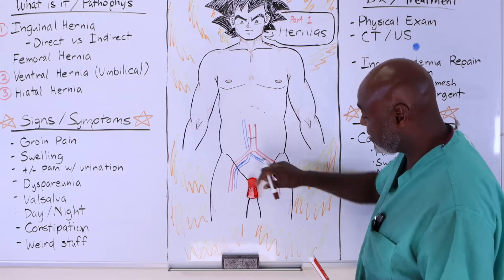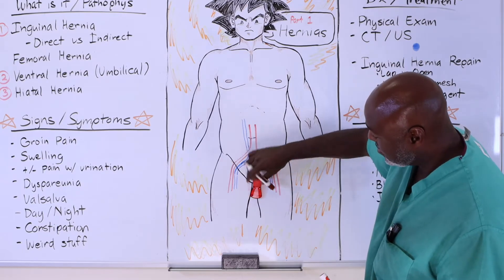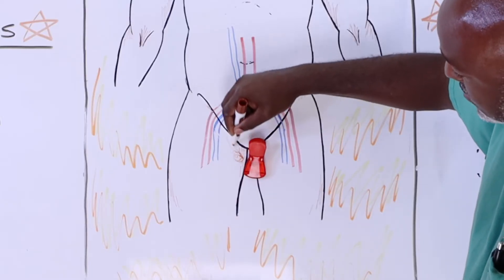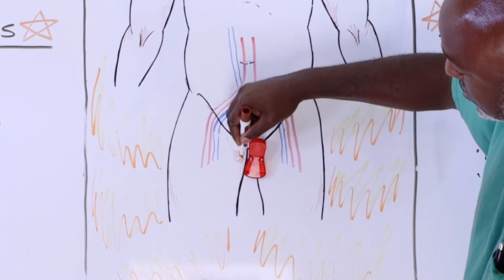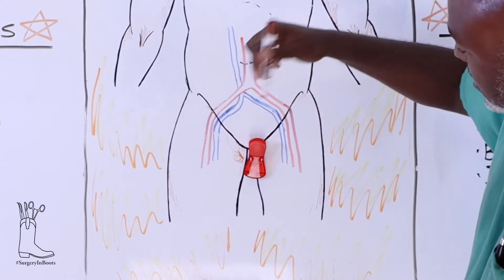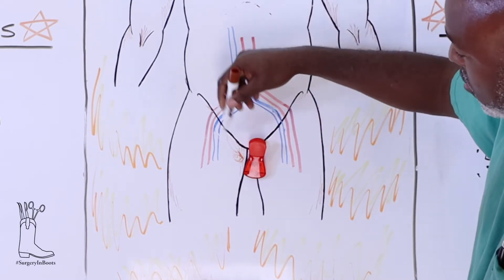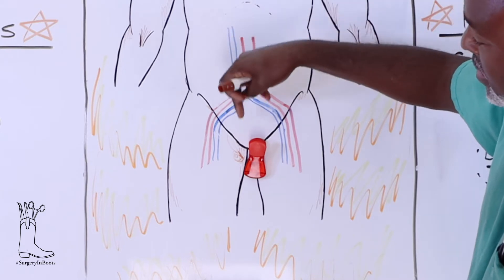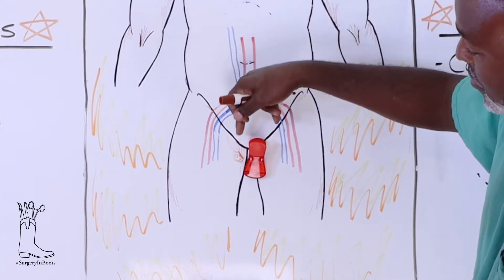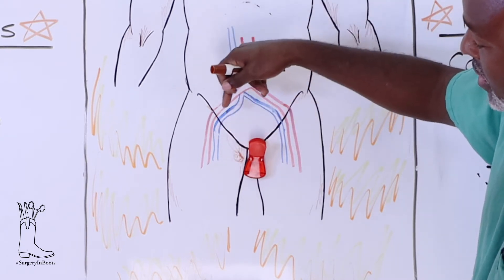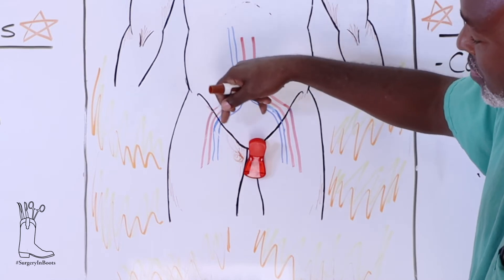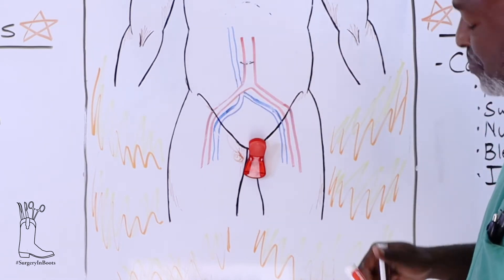The testicle drops down and the cord structures come just a little bit medial to this. This whole area is weak to accommodate the ability of the testicle to drop down into the scrotum when you're a child, as well as to provide room for the artery and vein so you have good blood supply.